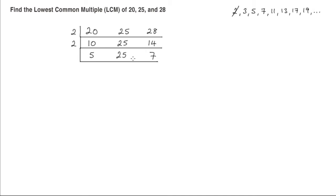Now 2 does not go into any of these numbers. Neither does 3. So the next prime number we can use is 5. 5 goes into 5 once. 5 goes into 25 five times. 5 does not go into 7, so we just write down the 7.